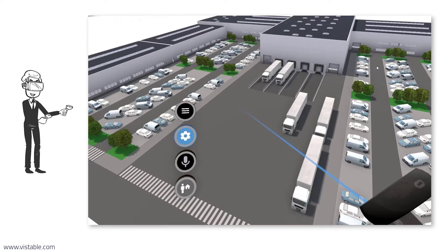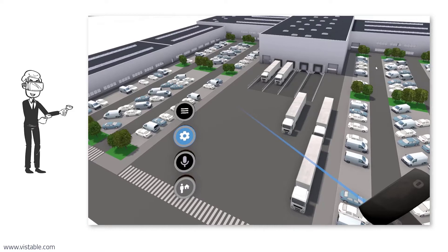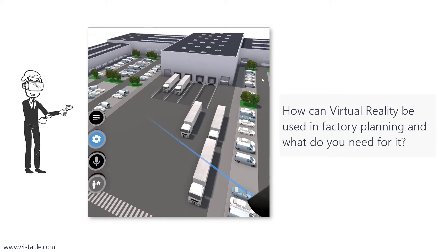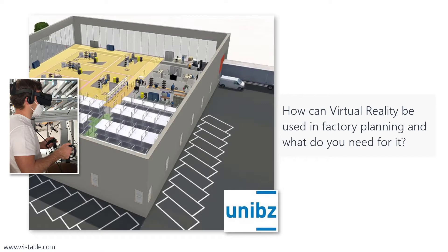Everyone is talking about virtual reality, and almost anything seems possible. But how can virtual reality be used in factory planning and what do you need for it? In this video, this question is answered and we use an example from the Free University of Bozen-Bolzano to show how easily it works in three steps, mobile and wireless.